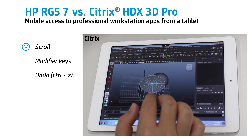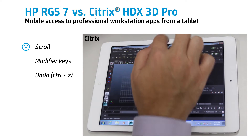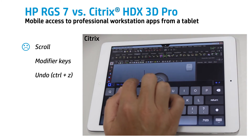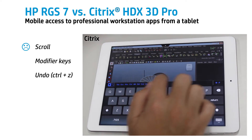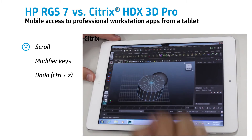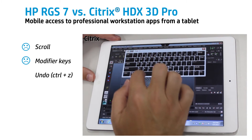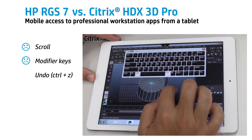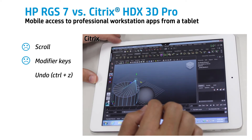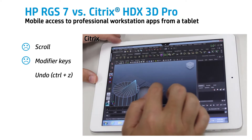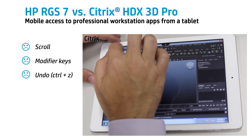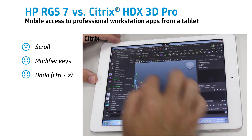We could not find a scroll wheel solution on Citrix. Likewise, there was no way to assign shortcuts to gestures. Modifiers don't work on the Citrix iPad keyboard, which takes up half the screen, so you must rely on another keyboard to press and use modifiers. If you make a mistake, you'll spend a lot of time hand-pecking the pull-down menu to get to the undo command.